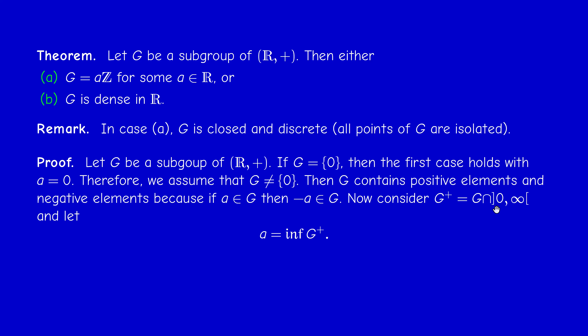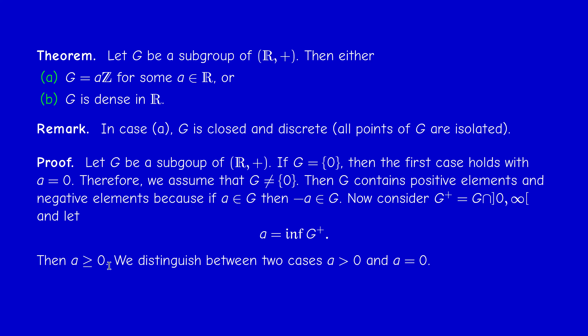Consider the positive elements of G and call it G+. G+ is not a subgroup of R+ because it's not stable under the operation of taking the opposite. Consider the infimum of G+. Since all elements of G+ are bigger than zero, then a, the infimum, is greater than or equal to zero. So we have two cases: a is strictly positive, or a equals zero.